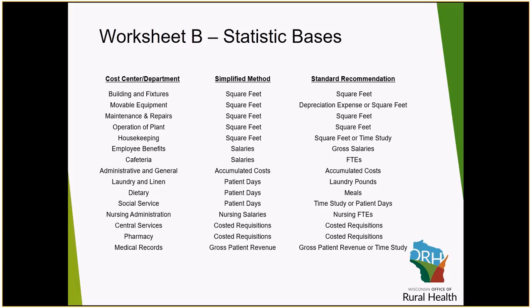If you utilize gross square footage, you need to be consistent and utilize it throughout your statistics, or utilize net and use it throughout. If you are utilizing the standard recommendation for movable equipment for depreciation expense, be sure that this ties out to your trial balance, and verify that it includes any interest or insurance related to those capital costs.